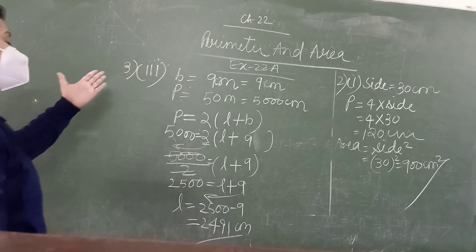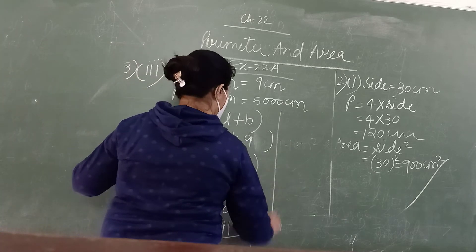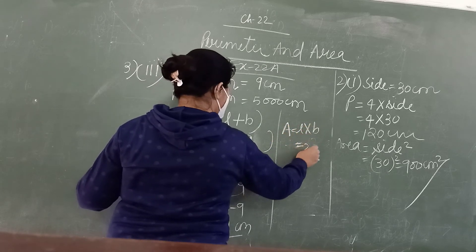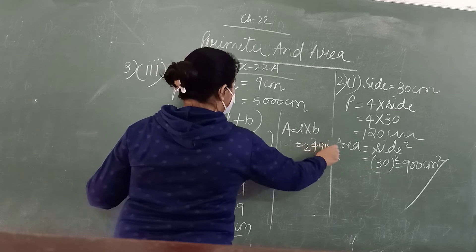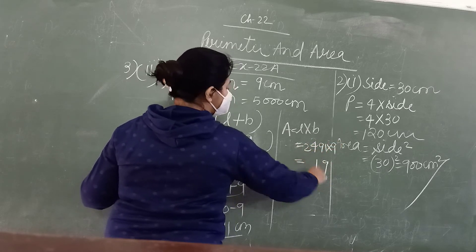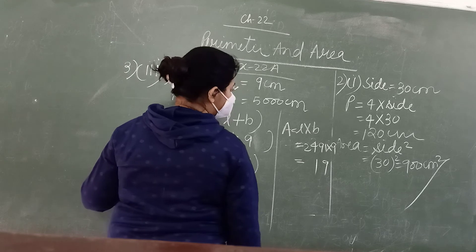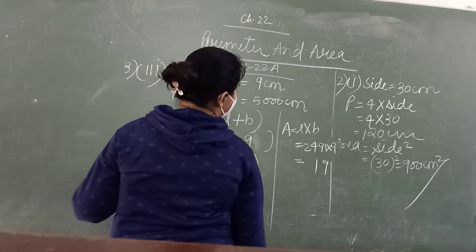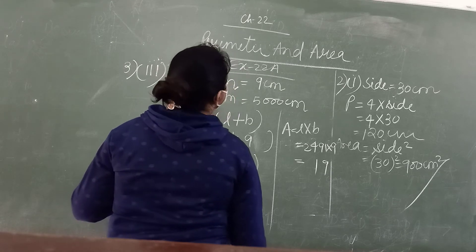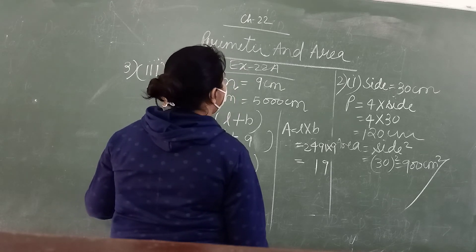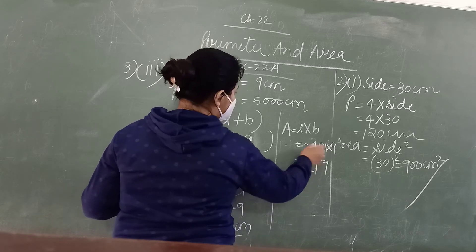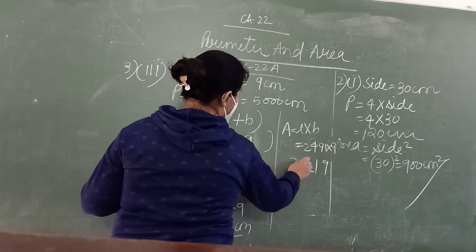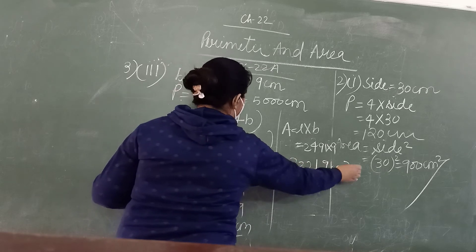And for area, area equals length into breadth. Area equals 2491 into 9. Working it out: 9 ones are 9, 9 nines are 81, carry 8; 9 fours are 36, plus 8 is 44; and continuing the multiplication gives the area in centimetres squared.